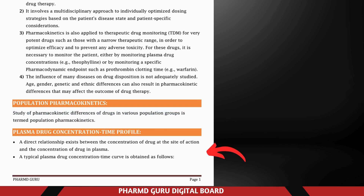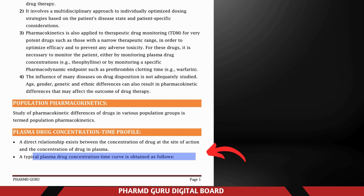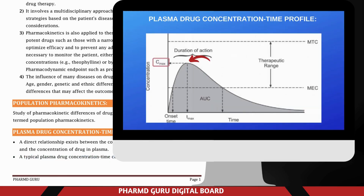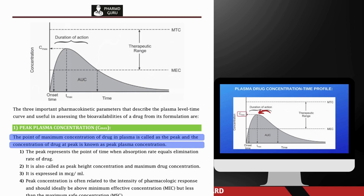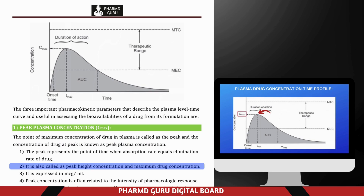Plasma drug concentration-time profile: a direct relationship exists between the concentration of the drug at the site of action and the concentration of the drug in plasma. Because the drug is distributed evenly throughout the body, the concentration in plasma gives us a measurable way to estimate how much drug is likely present at the target site. C-max refers to the maximum concentration of a drug in the bloodstream after administration — the point where the drug reaches its highest level in the body, sometimes called peak height concentration.